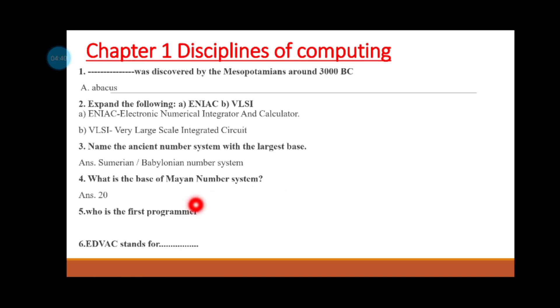Who is the first programmer? The first programmer is a lady. The name is Ada Augusta King, also known as Augusta Ada Lovelace.